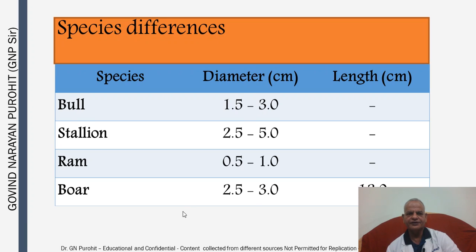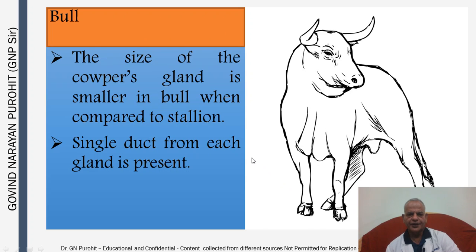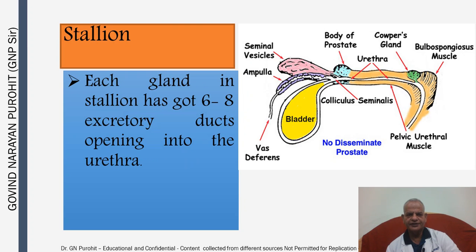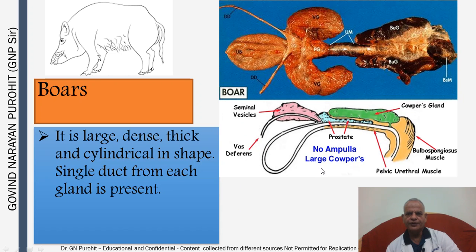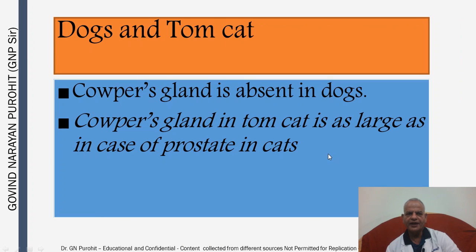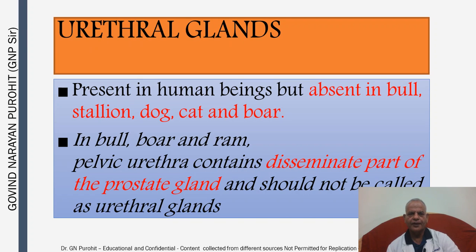These are the species differences. In the boar, the Cowper's Glands are the largest — length is around 12 cm and diameter is 2.5 to 3 cm. In the bull, the size is smaller compared to the stallion, and a single duct from each gland is present. In the stallion, each gland has 6 to 8 excretory ducts opening into the urethra. In the boar, the glands are cylindrical in shape with a single duct opening in the urethral passage. Cowper's Glands are absent in dogs, and in the tom cat they are as large as in the case of the prostate. Urethral glands are present in human beings but absent in the bull, stallion, dog, cat, and boar.